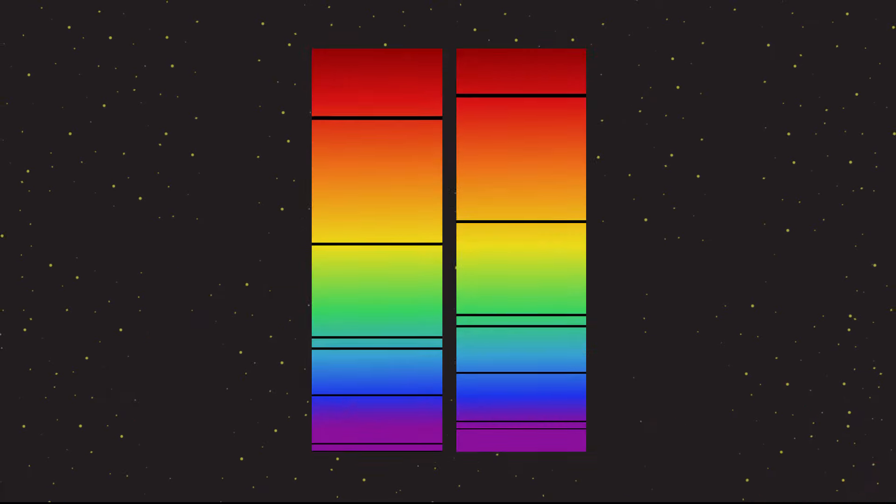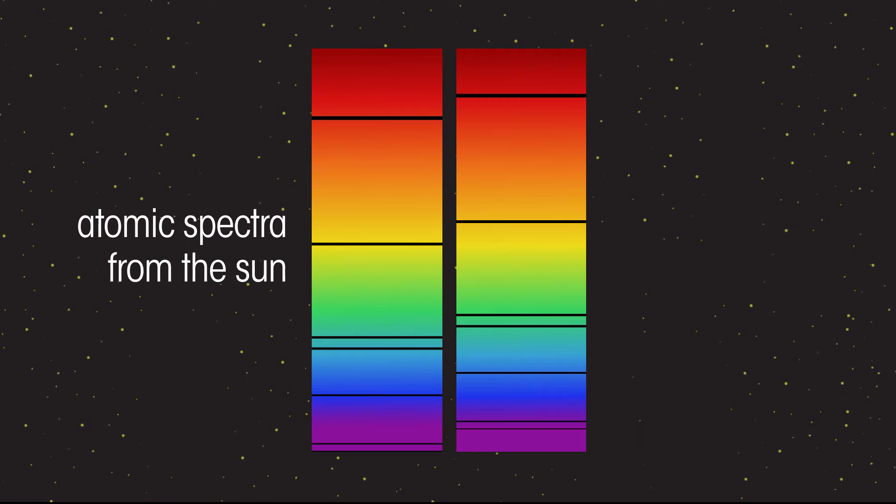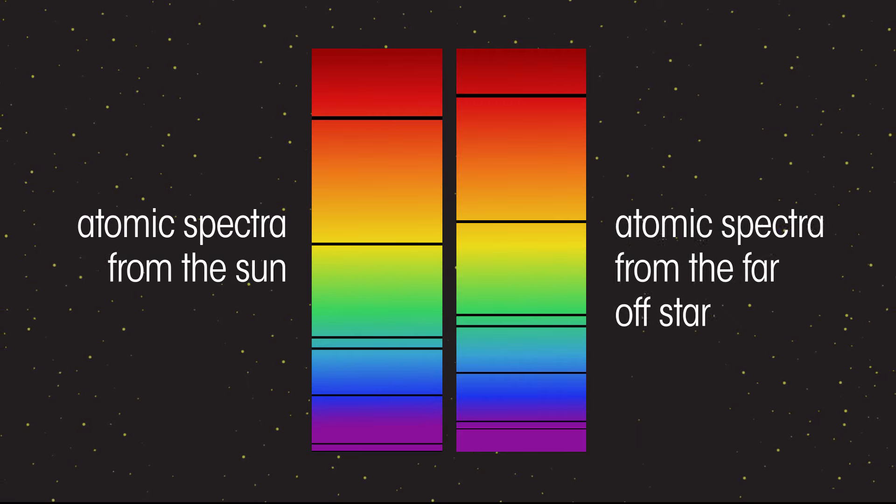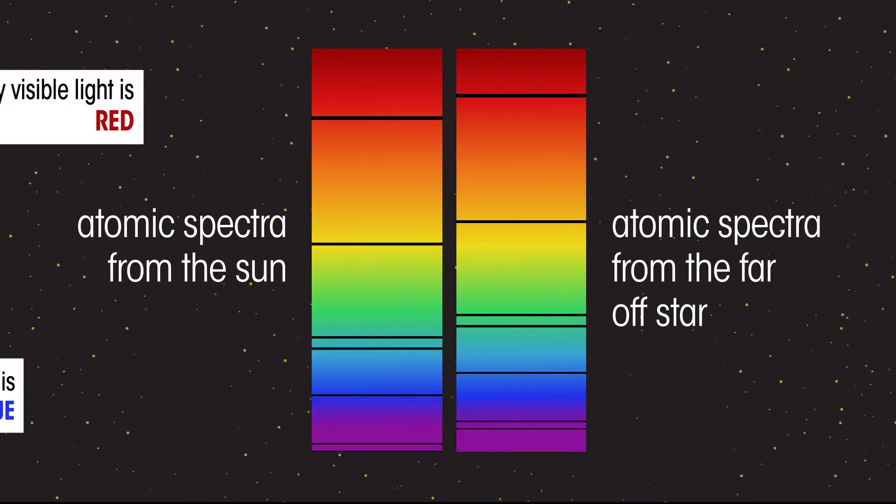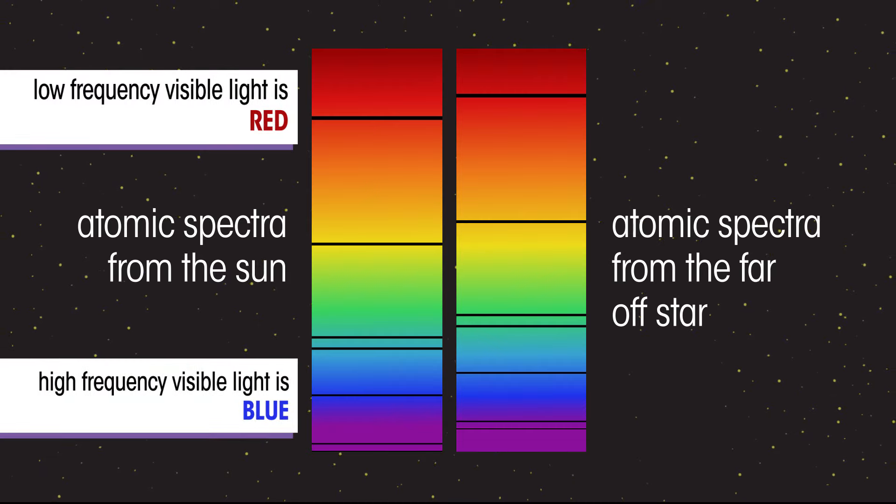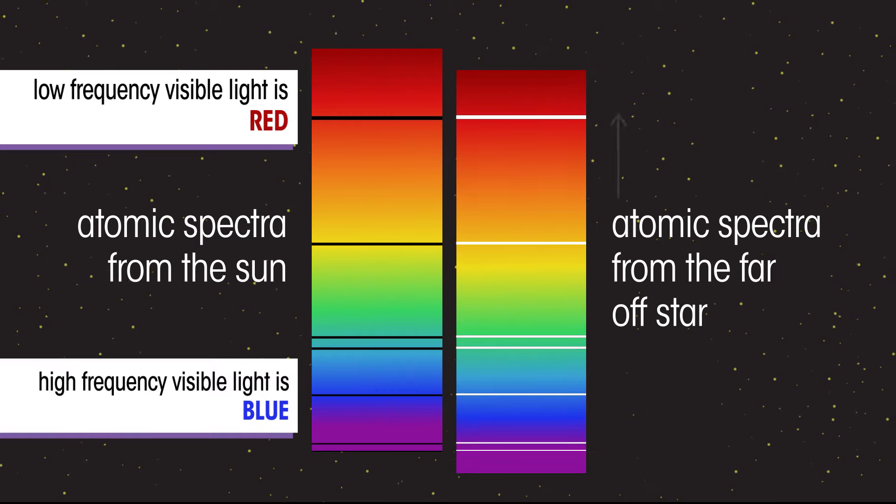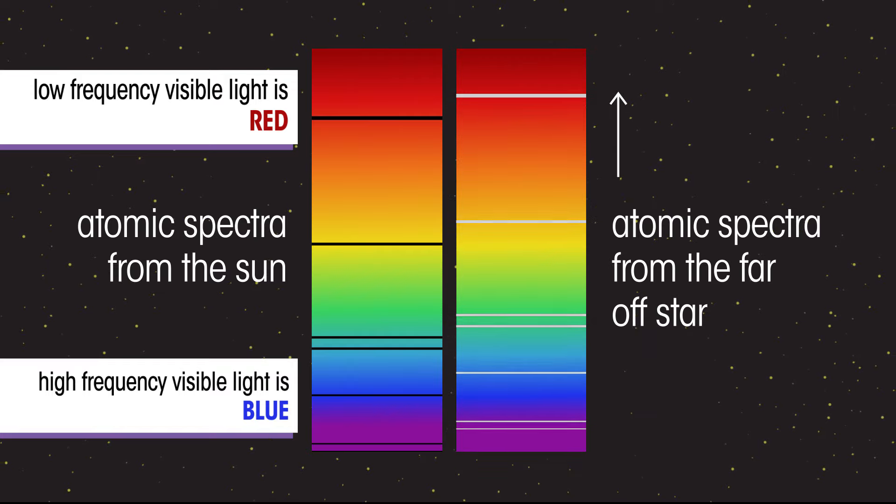Look at these two atomic spectra, one from our sun and the other from a distant star. Remember, low frequency visible light is red and high frequency visible light is blue. The lines in the spectra are the same pattern, but they have been shifted to the red end of the spectrum of the distant star.